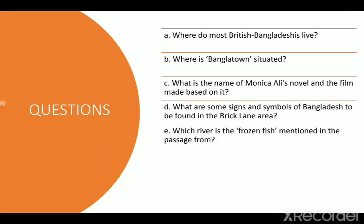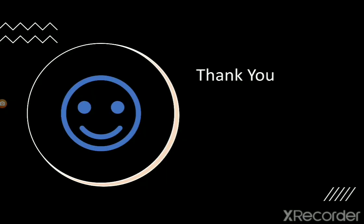Let's look at some questions: Where do most British Bangladeshis live? Where is Banglatown situated? What is the name of Monica Ali's novel and the film made based on it? What are some signs and symbols of Bangladesh found in the Brick Lane area? Which river is the frozen fish mentioned in the passage from? Please note down these questions, answer them in your own words, and also write a summary of this text.